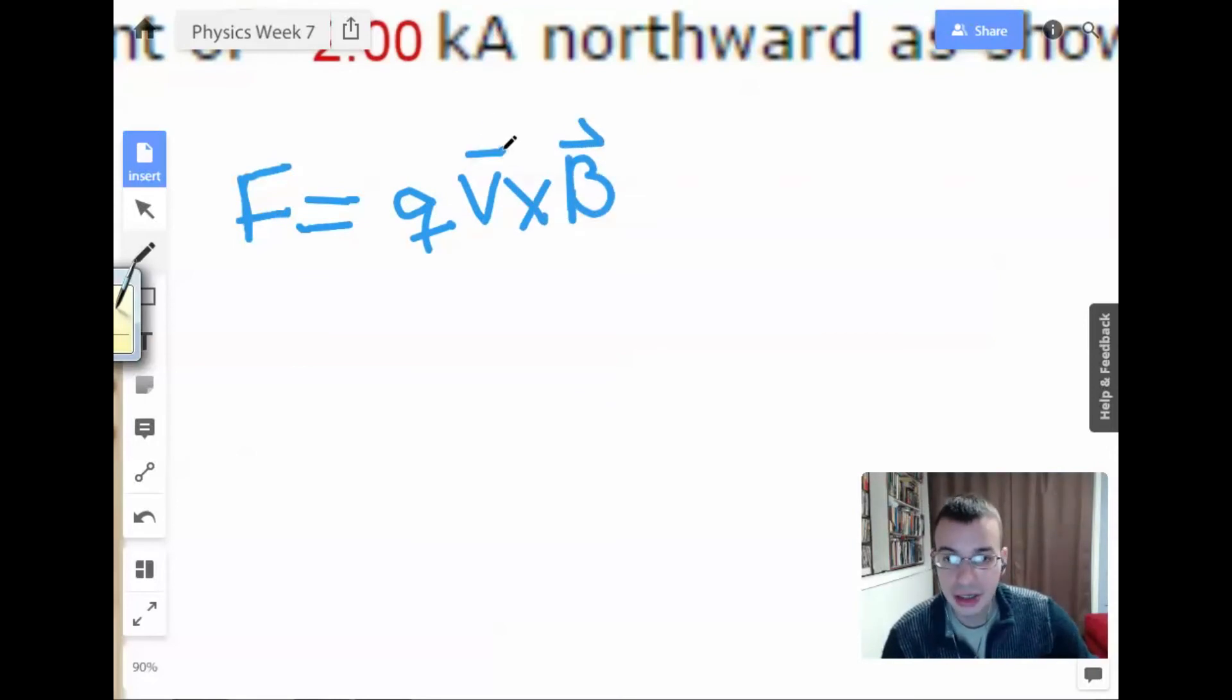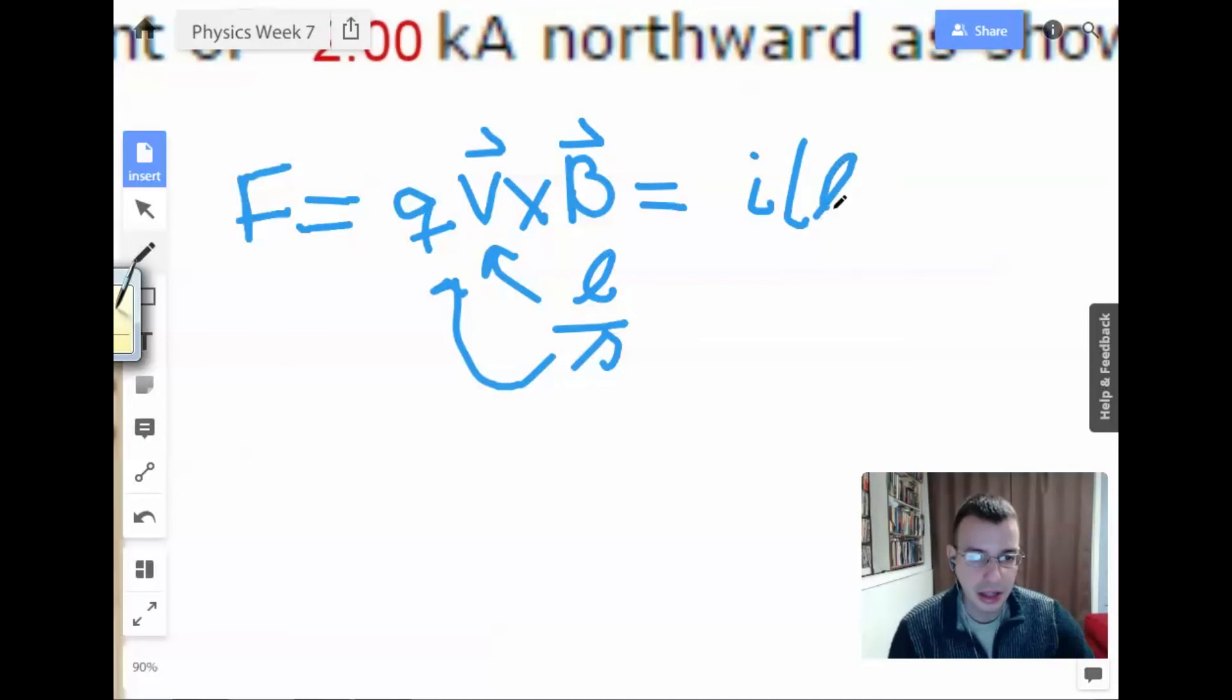Alright, so the idea here is if we look at V and we say, well, that's basically just a length per second. And we take the second and we give it to our Q, then we can also say that this is equal to IL cross B.